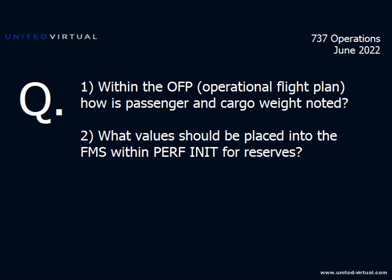For me, I put in the higher of two values for reserves: either 1,000 pounds less than REMF — meaning 1,000 pounds less than what I'm expecting to land with — or what I want to land at the alternate plus the fuel required to get to the alternate. The higher of those two is what I put in for reserves. I let the FMC act as a backup to me.